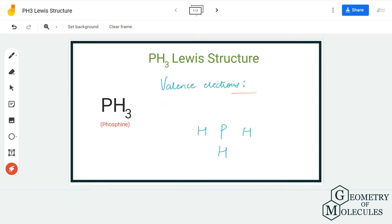Here we have one phosphorus atom which has five valence electrons in its outer shell, and we have three hydrogen atoms and each hydrogen atom has one valence electron in its outer shell.